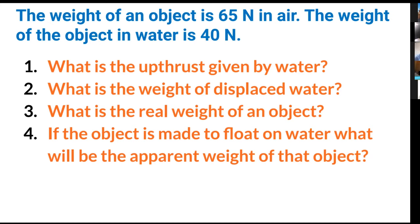Question number three: what is the real weight of the object? The answer is 65 Newton — the weight of the object in air means the real weight. Question number four: if the object is made to float on water, what is the apparent weight? The apparent weight means the weight of the object in water when floating.